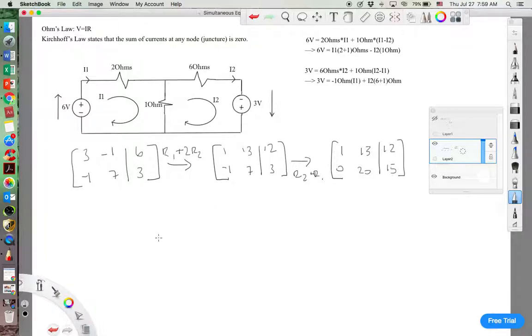And almost done here. Take R2, divide it by 20, 1, 13, 0, 1, 12, and 15 over 20 or 0.75.